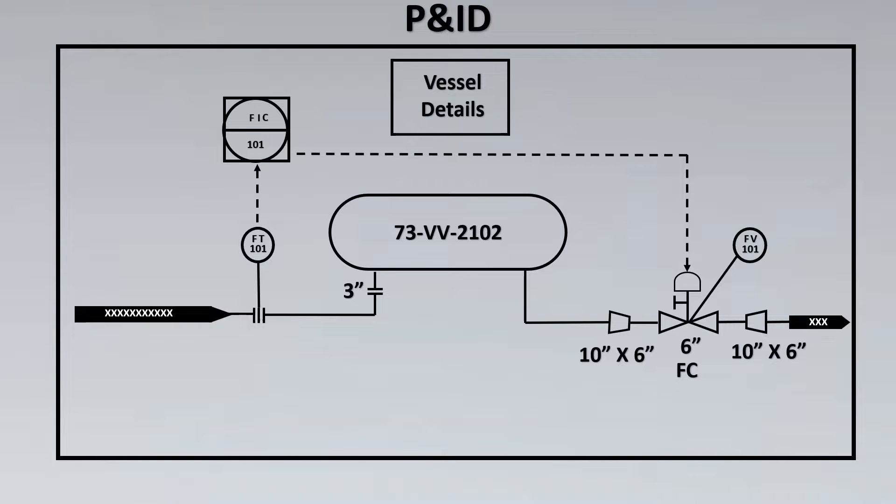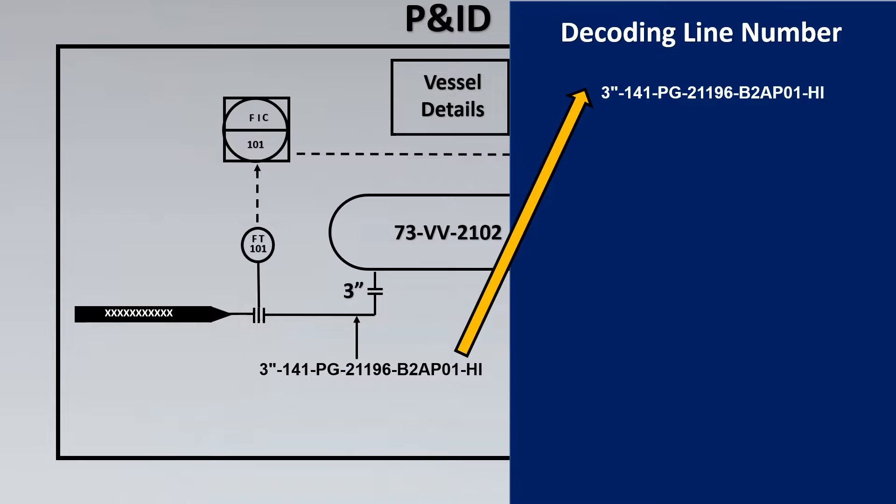Finally once we understand where the line is coming and going from, there's another important thing about a line which needs to be known. What is that? That is nothing but the line number. This is extremely important for almost any engineer that is working in any P&IDs. So let's try to decode and understand the line numbers. So first thing here is the first thing stands for the line size. So what is your line size? Is it 3 inch, 4 inch, you get to know that.